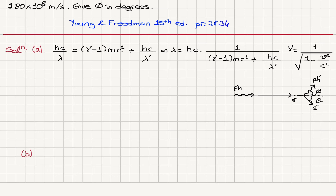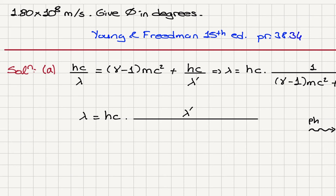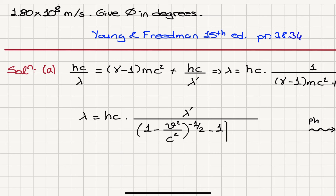We can rewrite this result by multiplying by lambda prime and taking lambda prime upstairs. So lambda is equal to hc times lambda prime, divided by the quantity: one minus v squared over c squared to the power of minus one half, minus one times mc squared. That is our gamma minus one times mc squared term, multiplied by lambda prime, plus hc.